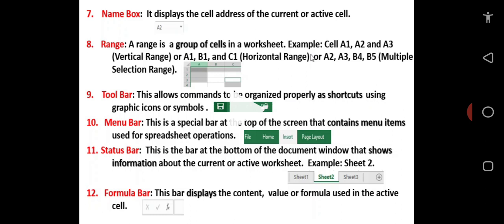The range. The range is a group of cells in a worksheet. Example: cells A1, A2, and A3 when highlighted together will give you a vertical range.